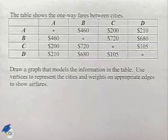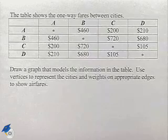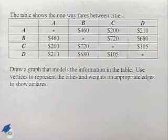We have four cities, A, B, C, and D. Draw a graph that models the information in the table. Use vertices to represent the cities and weights on appropriate edges to show airfares.